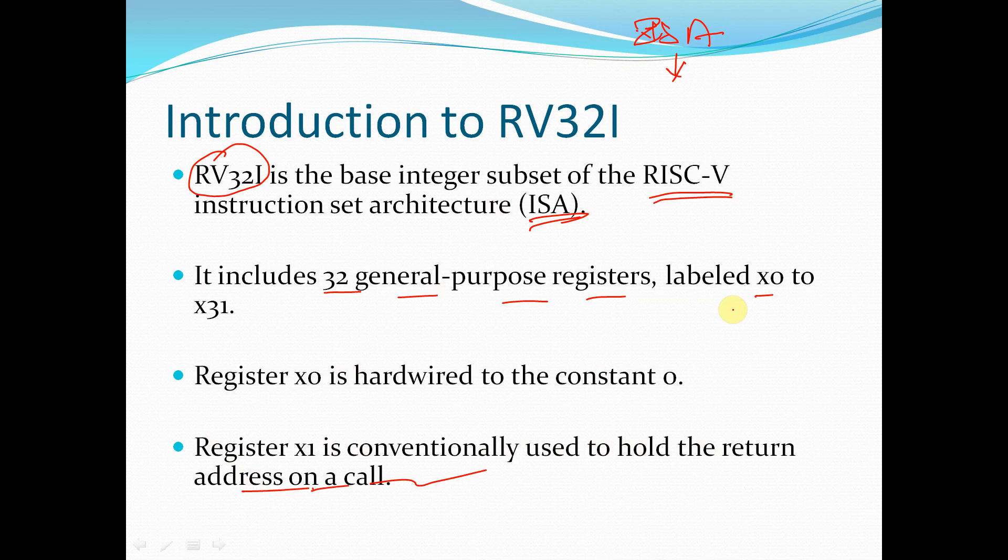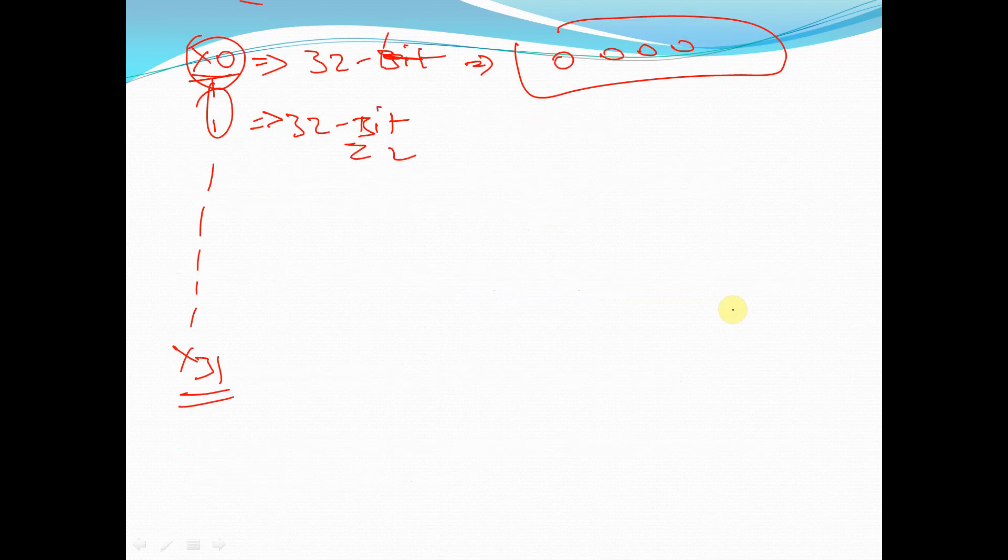For now, we will see the architecture of the RISC-V ISA base architecture — what we are going to learn and what we are going to design. I will draw the architecture. We have the PC — the program counter.